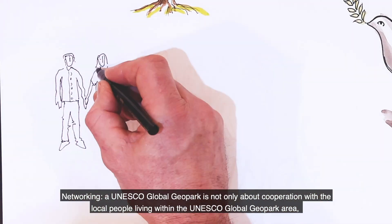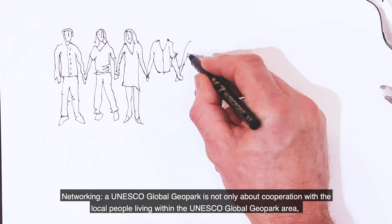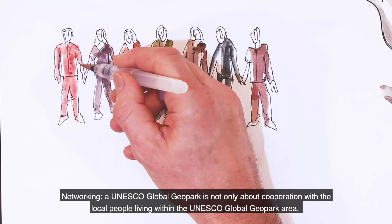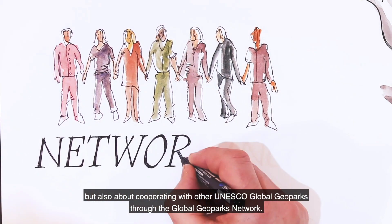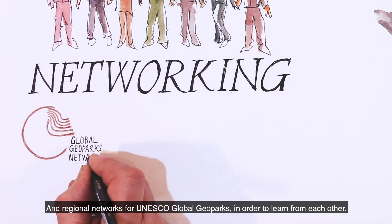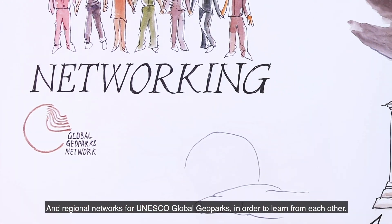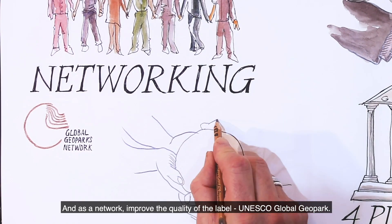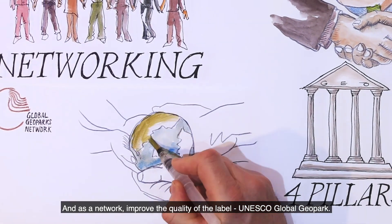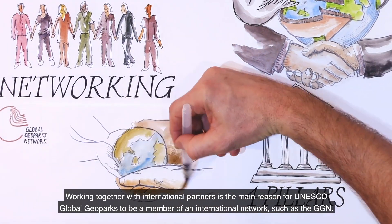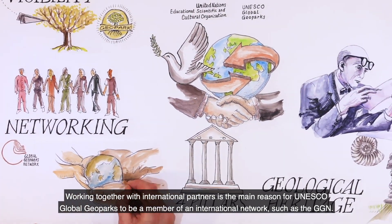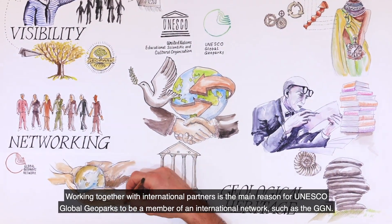Networking. A UNESCO Global Geopark is not only about cooperation with the local people living in the UNESCO Global Geopark area, but also about cooperating with other UNESCO Global Geoparks through the global geopark network, to improve the quality of the label UNESCO Global Geopark. Working together with international partners is the main reason for UNESCO Global Geoparks to be a member of an international network such as the GGN.